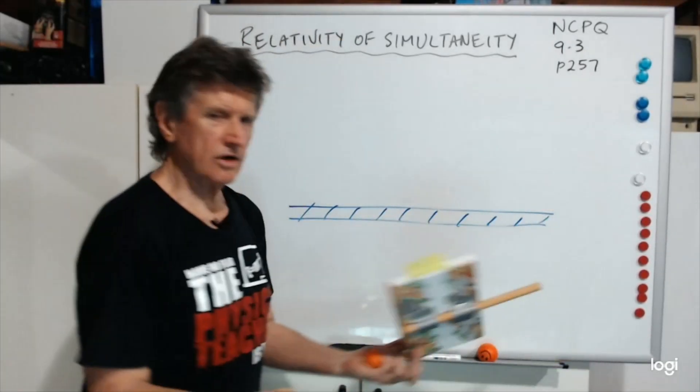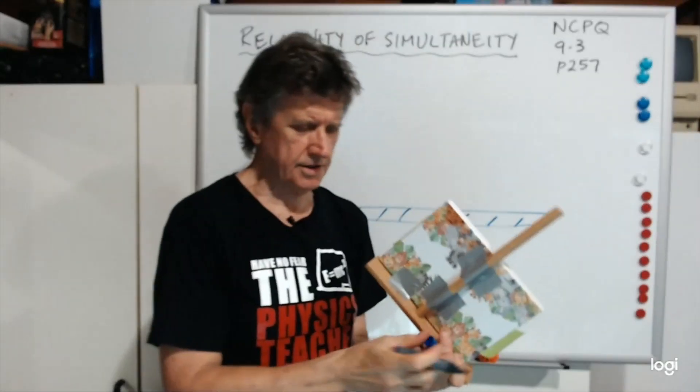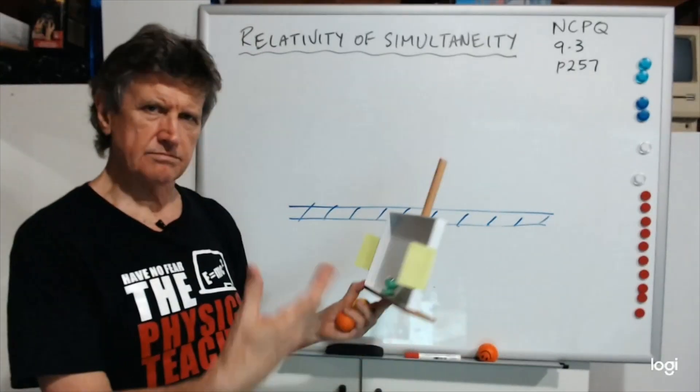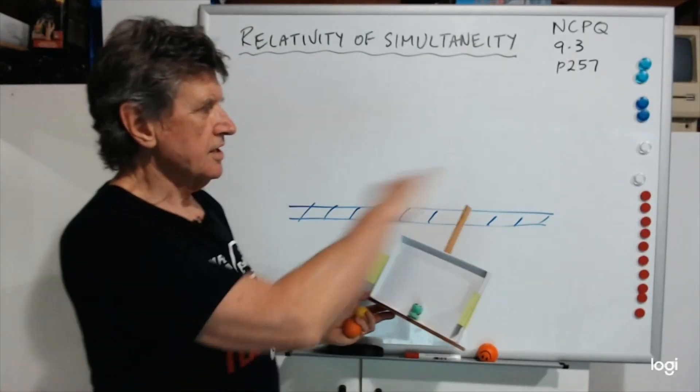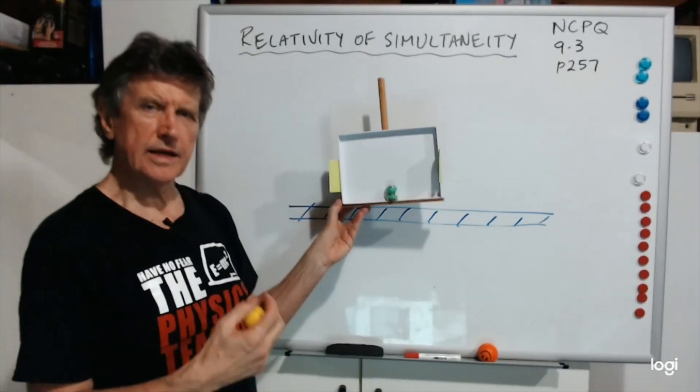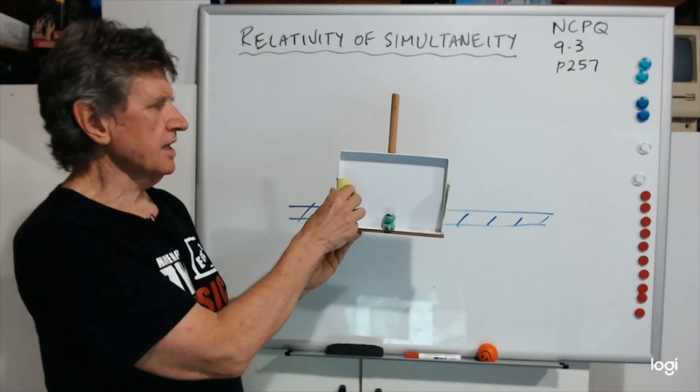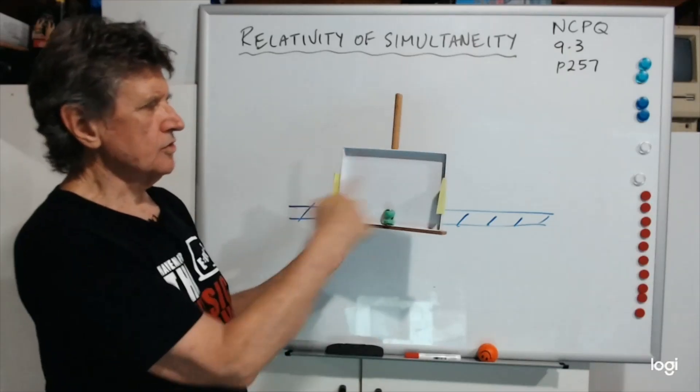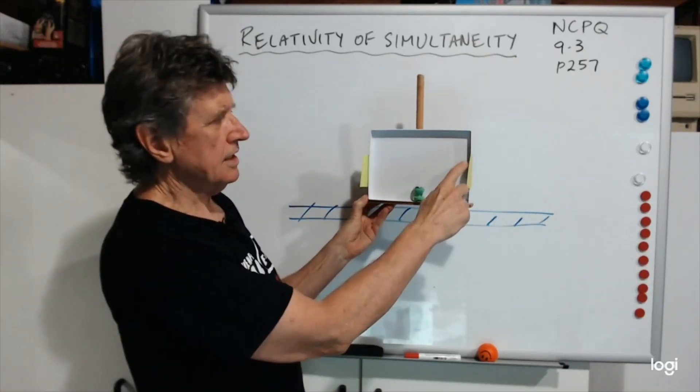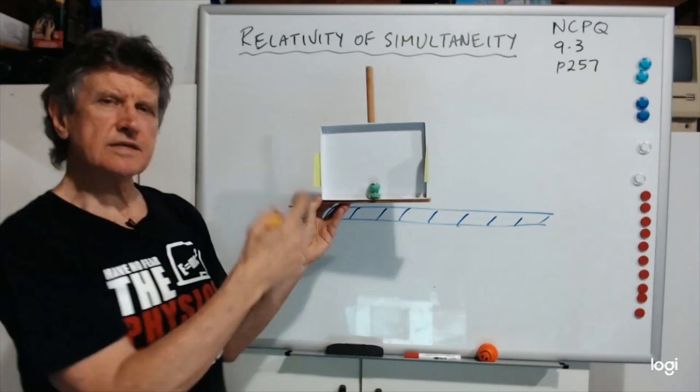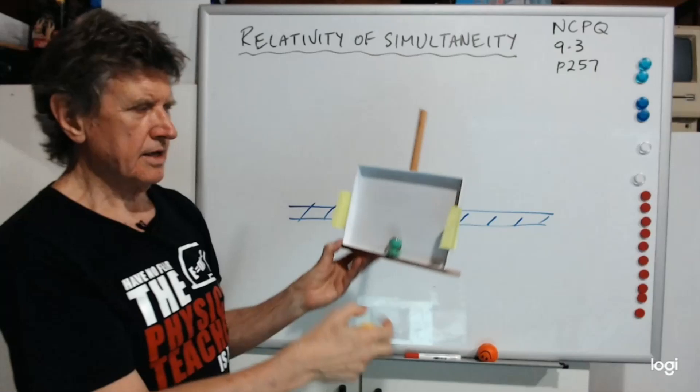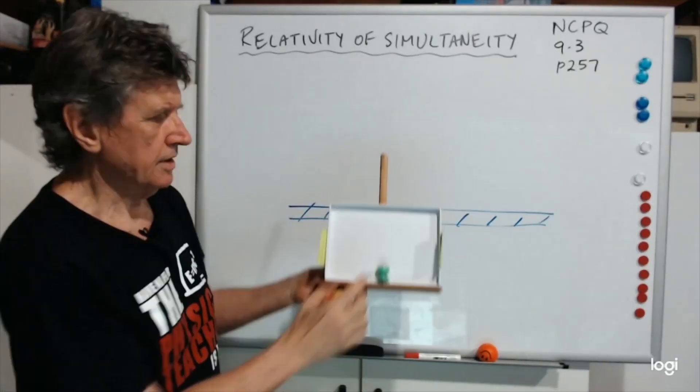Einstein liked using train lines because there's a train going through his town that he was living in, and it was a familiar object that he could use. Traveling in a straight line, constant speed, and it was just easy to use. Now let's imagine we've got this train carriage, and we've got these two doors, front and back of the train. Let's imagine the train moves this way, and we've got front door and back door. Let's imagine these doors are light activated. In other words, when a beam of light strikes them, they will open.